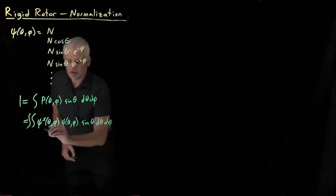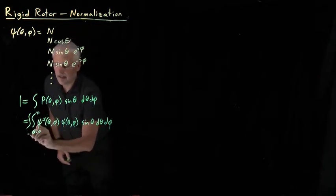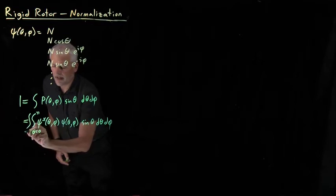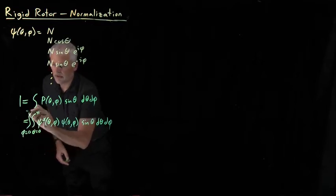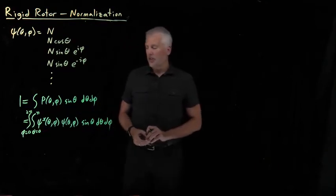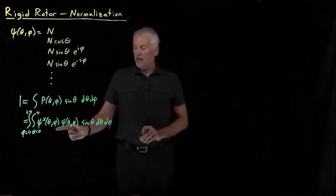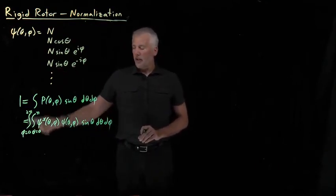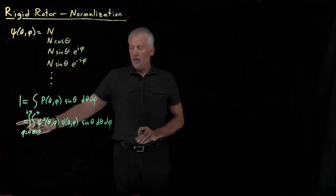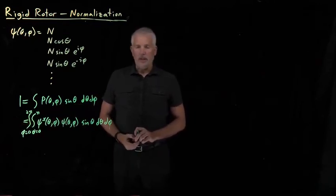Let's write the limits of this integration. I'm integrating over two variables: theta runs from 0 to pi, and phi runs from 0 to 2 pi. So that's the recipe for normalization — take one of our wavefunctions, plug it into this integral, integrate in this way, and we need to make sure we get 1 out on the other end.